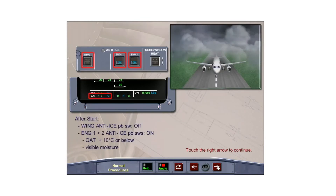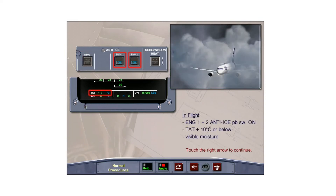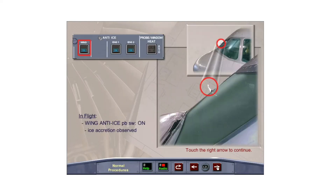After engine start, confirm that the wing anti-ice push-button switch is in the off lights-out position. Select Engine 1 and Engine 2 anti-ice push-button switches on if the outside air temperature is plus 10 degrees Celsius or below and visible moisture is present. Icing conditions also exist while taxiing on the ground where surface snow, standing water, or slush may be ingested by the engines. In flight, select the engine anti-ice push-button switches on when the TAT is plus 10 degrees Celsius or below and visible moisture in any form is present, except during climb or cruise when the SAT is minus 40 degrees Celsius or below. In flight, select the wing anti-ice push-button switch on any time that ice accretion is observed on the wings, ice detector probe, or fuselage.